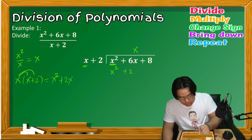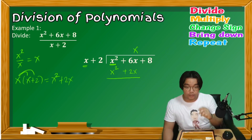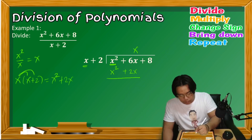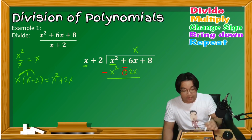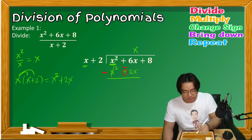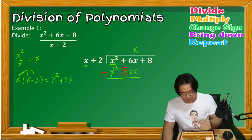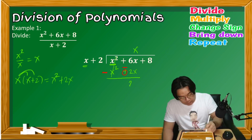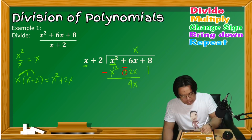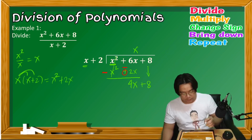Instead of subtracting, we change the signs of the product and apply addition. x² minus x² is 0; 6x plus negative 2x gives positive 4x. Then we bring down the next term, positive 8, and return to step 1, which is to divide the first terms.